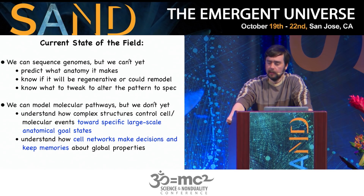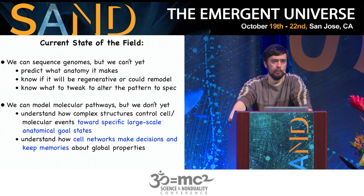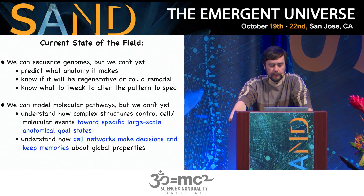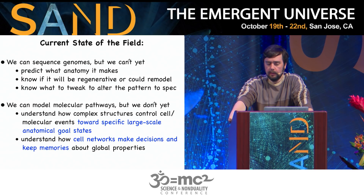The current state of the field is this: we're very good at sequencing genomes — it's become cheap and easy. But if somebody gives you a genome, you cannot predict what anatomy it's going to be. We do not have the ability to look at a genome and say whether this organism will be shaped like an oak tree or an octopus. We can't tell if it's going to be regenerative or if it's going to remodel itself. If you had a genome for an organism with four fingers and wanted five, what would you tweak? For those of us told that genome projects were going to answer every question, this is far from true. We still need to do the hard work of getting from genomics to anatomy.